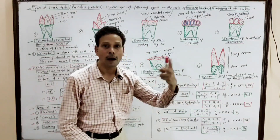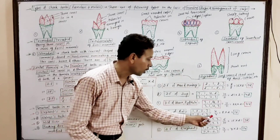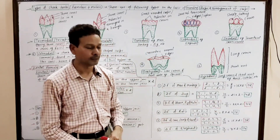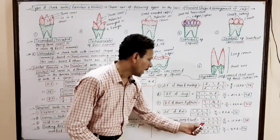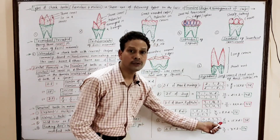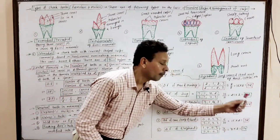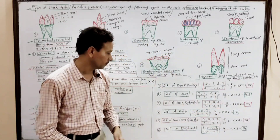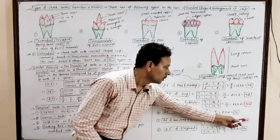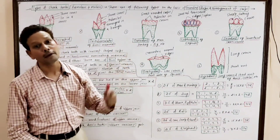The dental formula of cow, sheep, and goat is: upper jaw I 0, C 0, PM 3, M 3 — meaning no incisors and no canines in the upper jaw. In the lower jaw: I 3, C 1, PM 3, M 3. The total number of teeth in cow, sheep, and goat is 32, like in man.